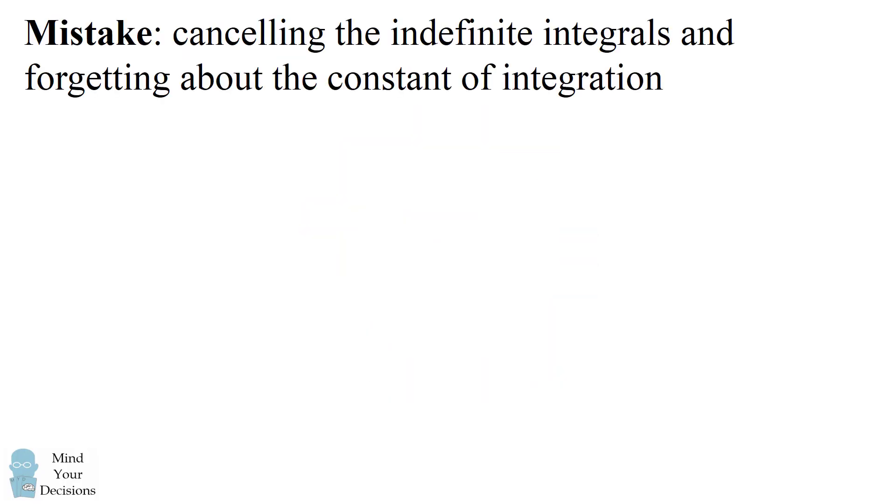So the mistake in the proof is canceling the indefinite integrals and forgetting about the constant of integration. Up to this line in the proof is correct. The problem is when we take these two indefinite integrals and cancel them out. You can't cancel them out because they're only unique up to a constant of integration.